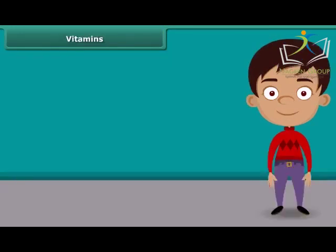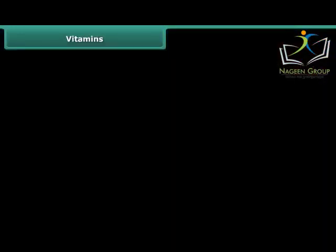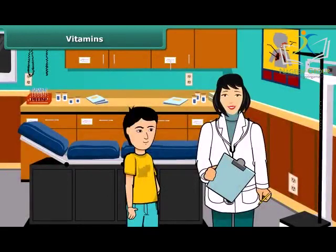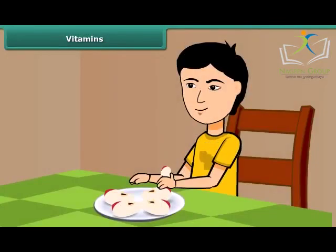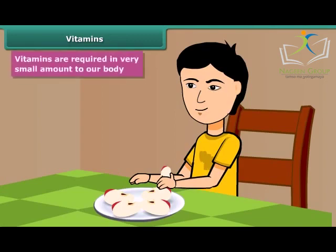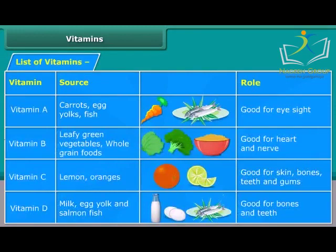When you get ill and go to the doctor, he advises you to take some fruits with light food because many of our body processes require vitamins present in foods and vegetables. They are required in very small amounts. Here is a list of vitamins, their sources and their roles.